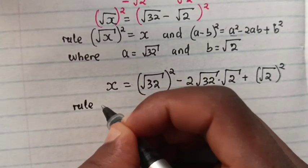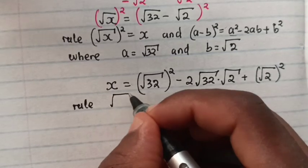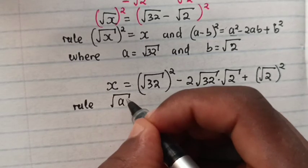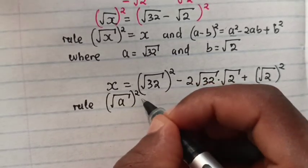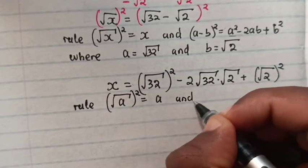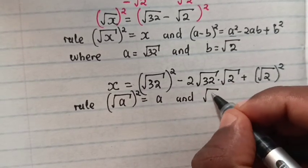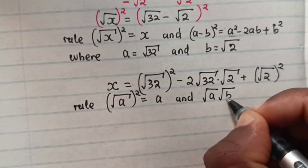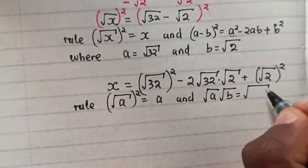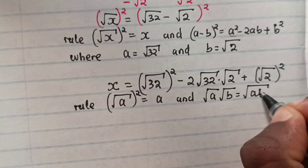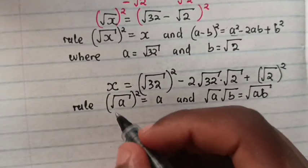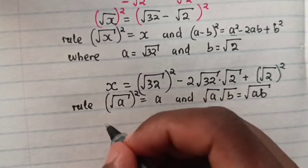Then we apply the rule that square root of a bracket squared is equal to a, and square root of a times square root of b is equal to square root of a times b.